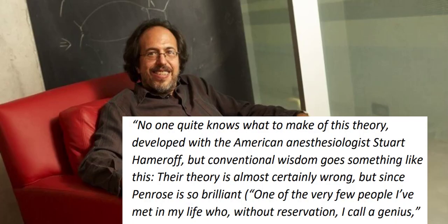Some criticized the mathematical and physical foundation of the theory, while others required more empirical evidence. In 2017, Steve Paulson went as far as to describe Penrose as a maverick in the field of science. No one can quite know what to make of this theory. But conventional wisdom goes something like this: the theory is almost certainly wrong, but Penrose is brilliant — one of the very few people I have met in my life who, without reservation, I call a genius, physicist Lee Smolin said. And here we are, knowing not so much about the brain that we can adopt or debunk this theory.